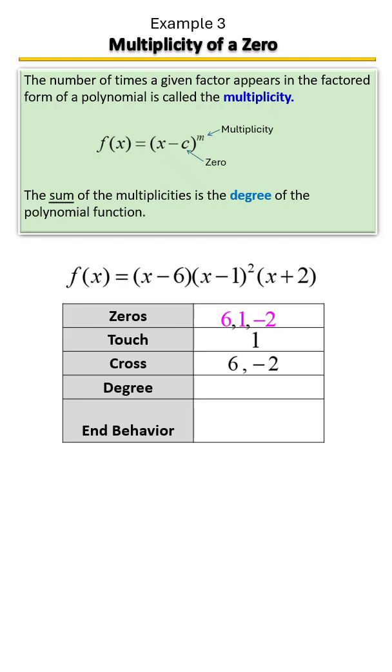What is the degree of this polynomial? Well, to find the degree recall all we have to do is simply add up the multiplicities. So that would be 1 plus 2 plus 1. So this is a fourth degree polynomial.